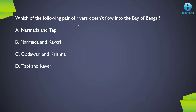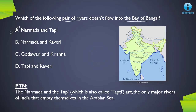Next question: which pair of rivers does not flow into the Bay of Bengal? We need to find two rivers that do not drain into the Bay of Bengal. The correct answer is A, Narmada and Taapi. Narmada and the Tapti river are the only two major rivers of India that empty themselves into the Arabian Sea. All other major rivers — Brahmaputra, Ganga, Mahanadi, Godavari, Krishna, and Kaveri — finally drain into the Bay of Bengal. So remember: only two major rivers, Narmada and Tapti, meet the Arabian Sea.